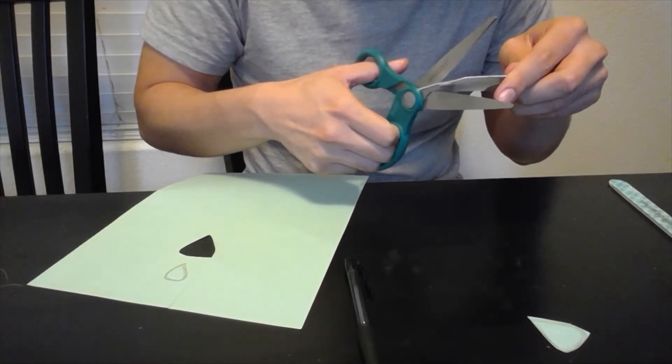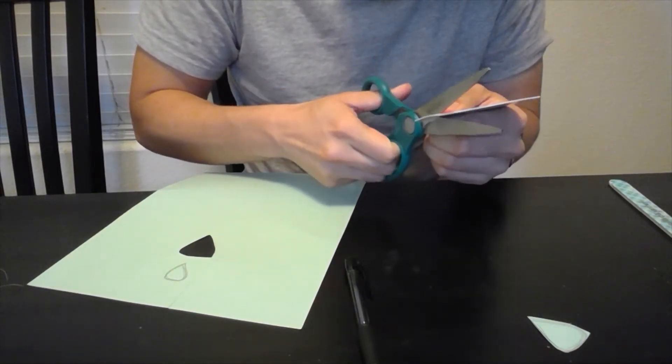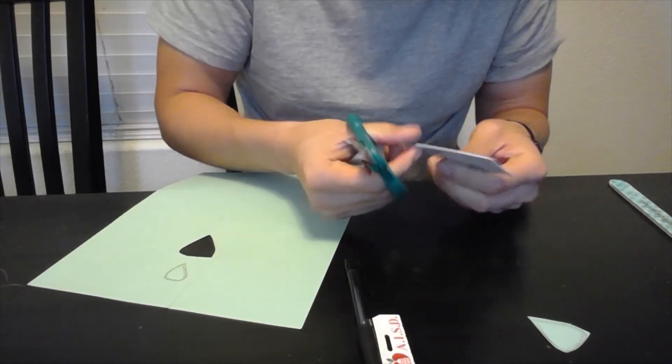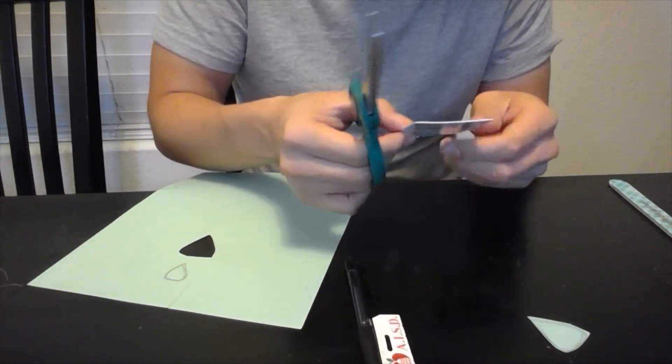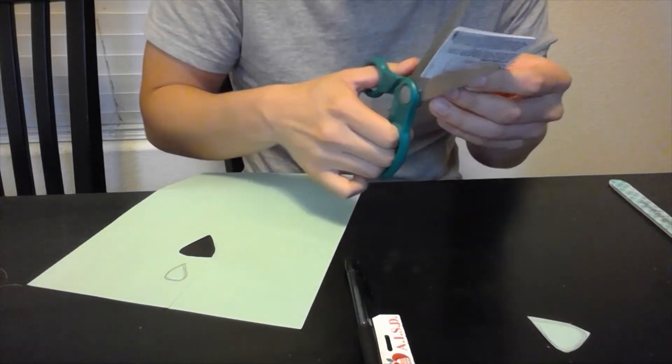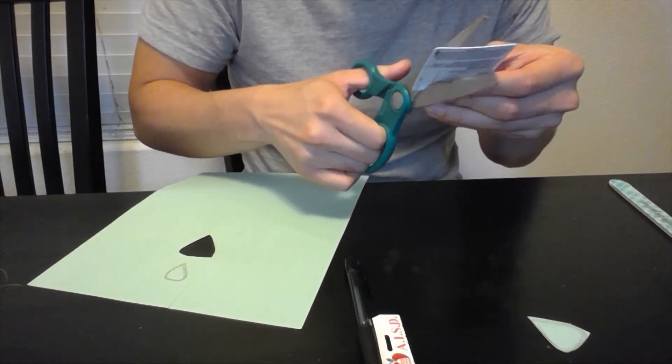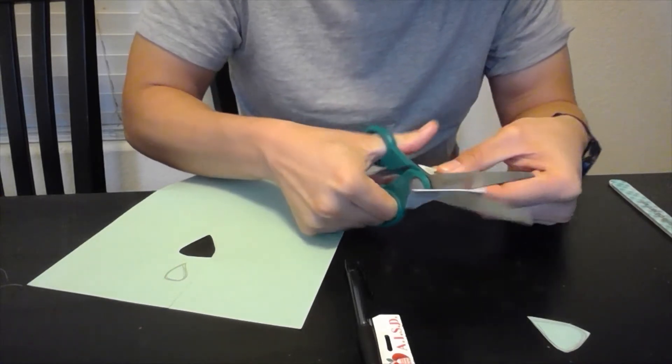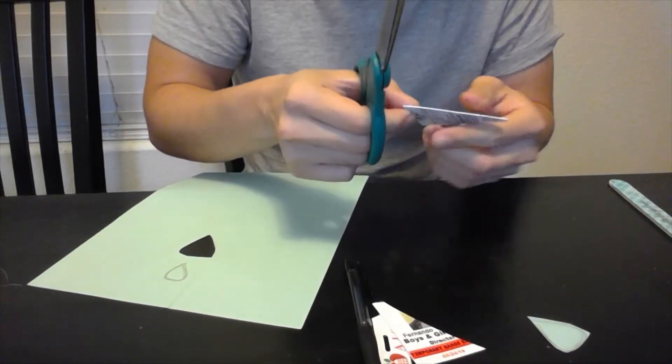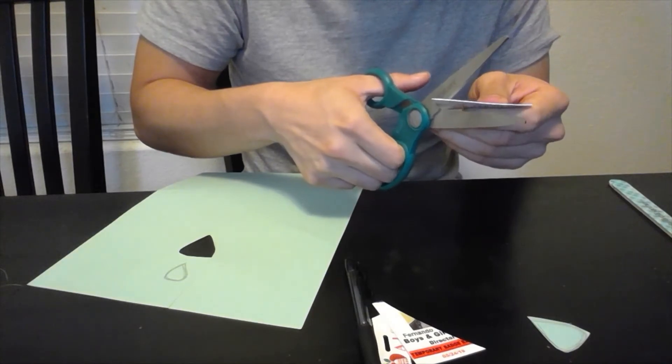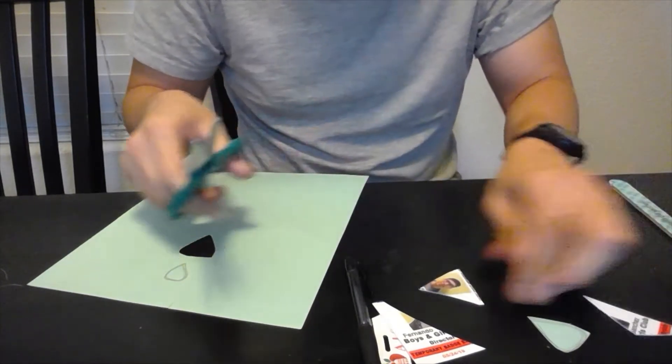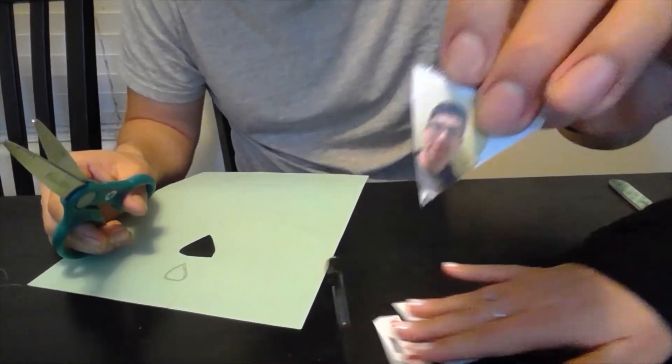Now be very careful because once you start cutting the ID, it does get a little sharp. I'm gonna make mine into a triangle first and then shape it afterwards. As you can see, my face is in the center.